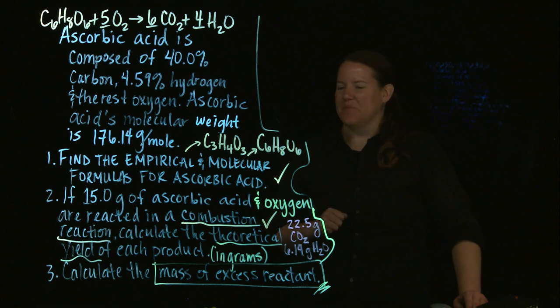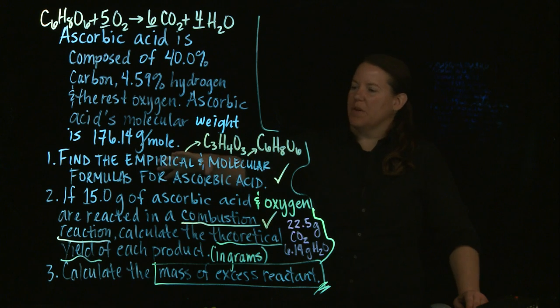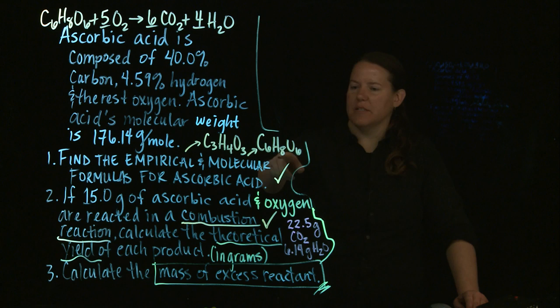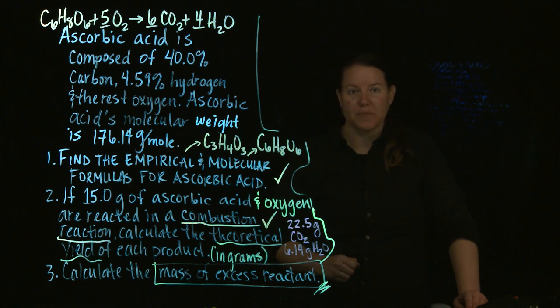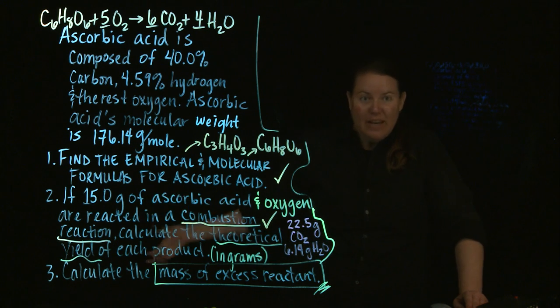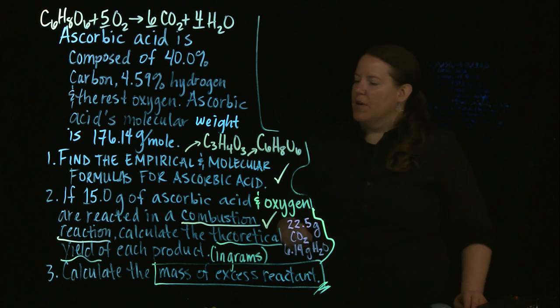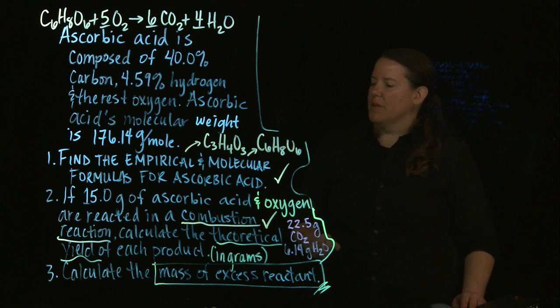In terms of this, we have gotten through the first two parts. We've gotten through the first part, which is finding the empirical molecular formula for ascorbic acid. We found we've done a limiting reactants problem. We changed it slightly into a limiting reactants problem, recognizing that the last question couldn't be asked unless it was a limiting reactants problem. And so, we have 15 grams of ascorbic acid and of oxygen, and those are reacted in a combustion type reaction.